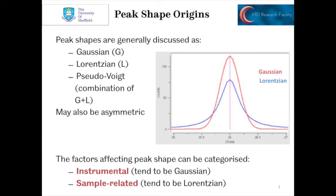Often we actually talk about diffraction peaks as being a pseudo-Voigt shape, which is a combination of both of these effects, Gaussian and Lorentzian. And of course they may also be asymmetric as well, so we may have some asymmetry in the peak shape.